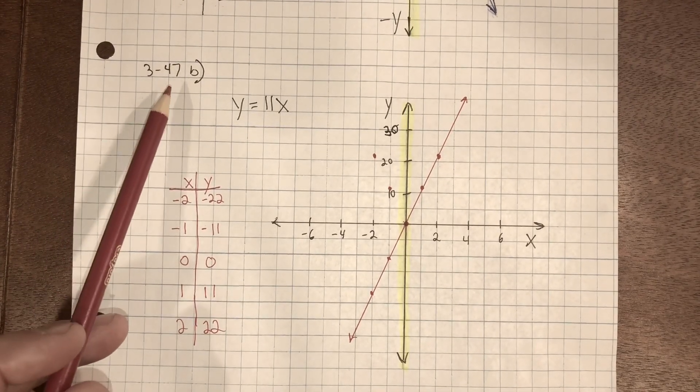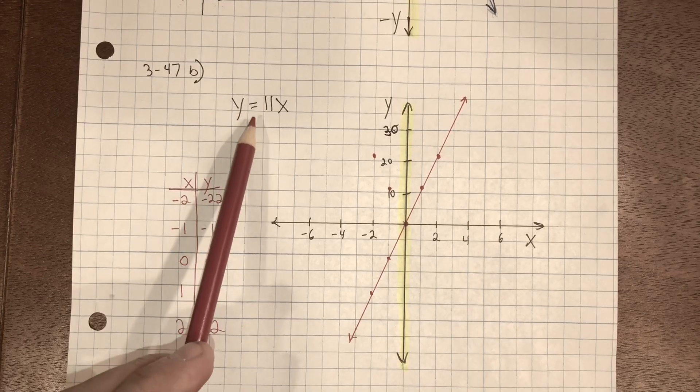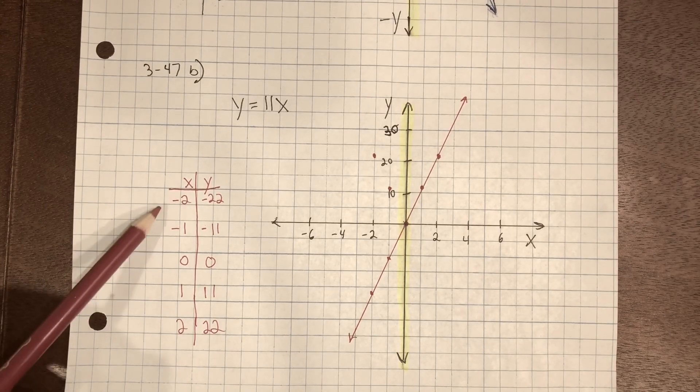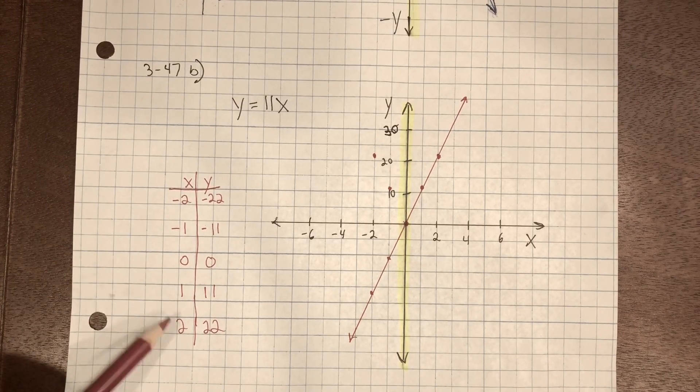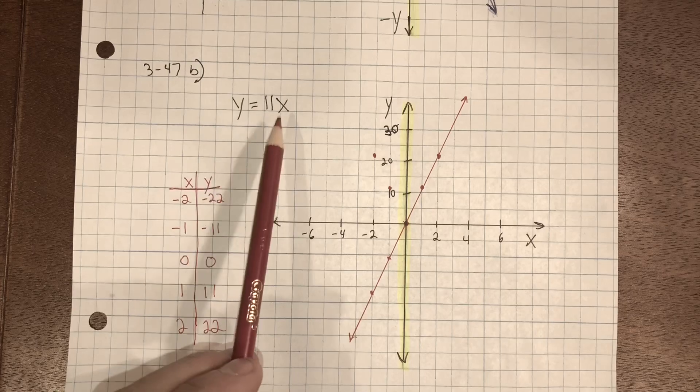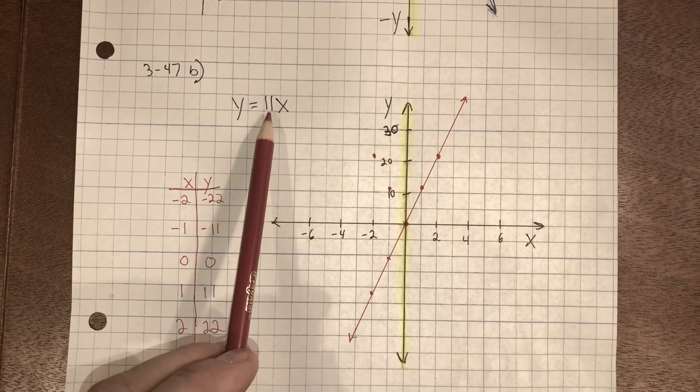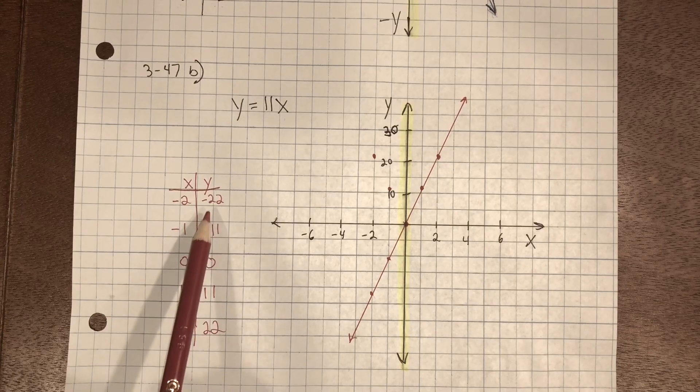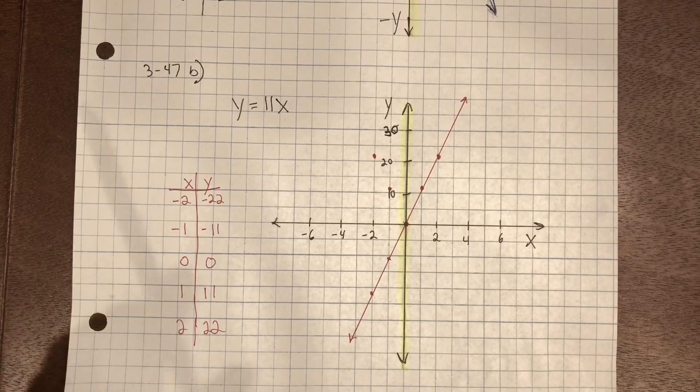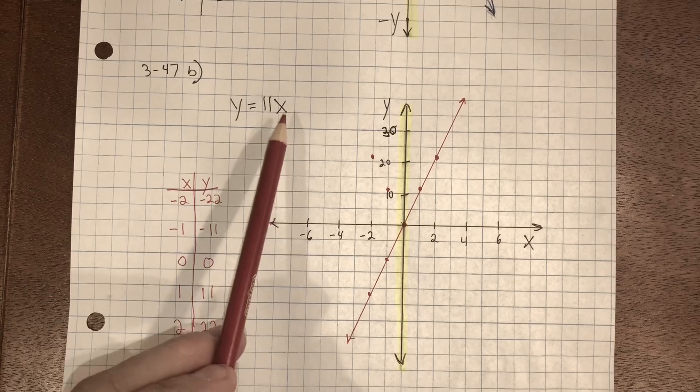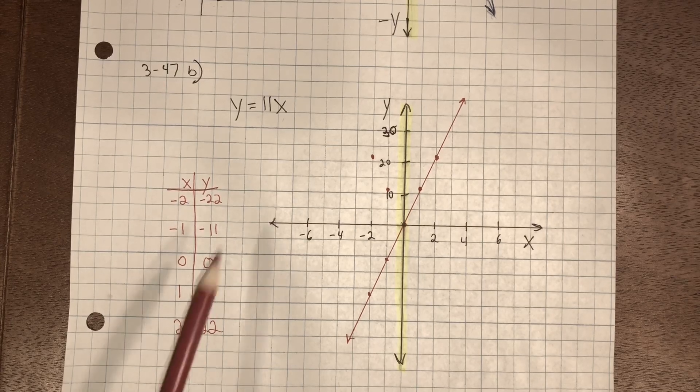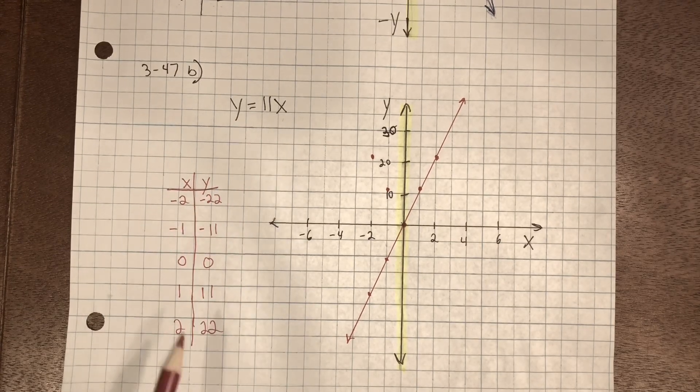For problem 347B, I have the rule y equals 11x. I again chose several negative numbers and positive numbers and zero. If x has the value of negative two, 11 multiplied by negative two equals negative 22. Remember, a positive number multiplied by a negative number will equal a negative. Zero for x, 11 multiplied by zero equals zero. If x has the value of two, 11 multiplied by two equals 22.